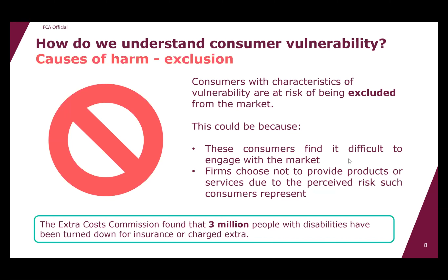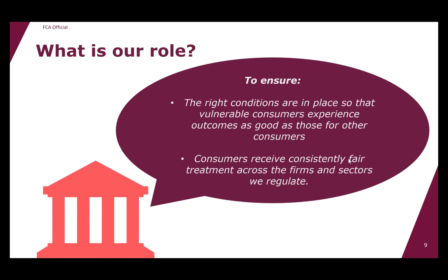Vulnerable consumers are not just at risk of poor-value products — they can also be excluded from certain financial services altogether. Some characteristics of vulnerability make it difficult to search for products effectively, for example if a consumer lives in temporary accommodation with unreliable internet access. Even further, some firms choose not to serve consumers with certain characteristics of vulnerability due to the perceived risk they represent — the Extra Costs Commission found that three million people with disabilities had been turned down for insurance or charged extra.